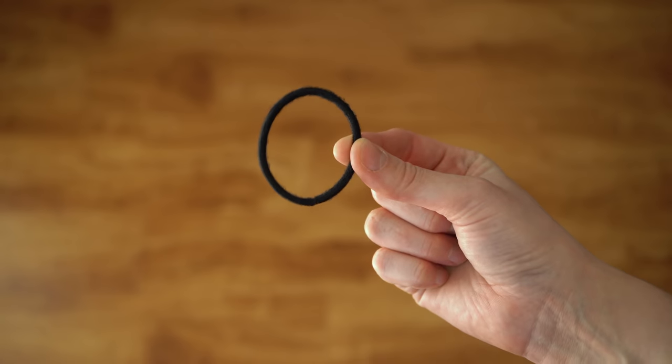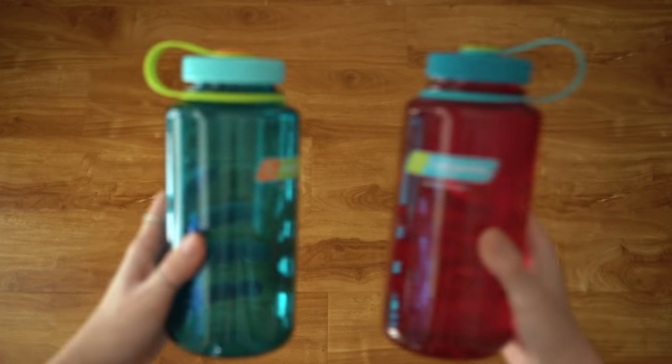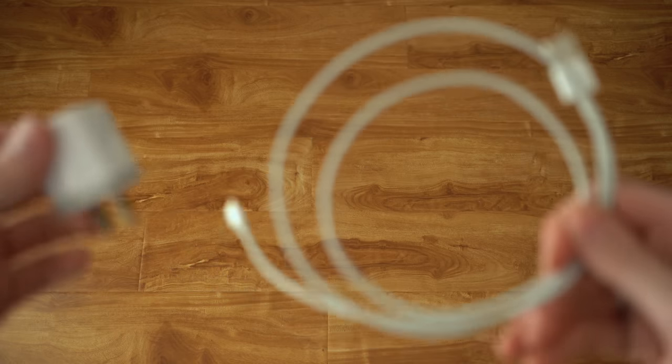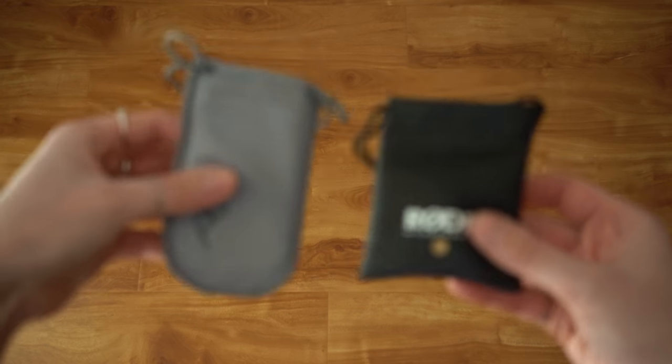I'll usually have one of these black hair ties on me. I started carrying a Nalgene water bottle again, so I'll often bring one of these with me. Once in a while, I'll bring a phone charger with me.